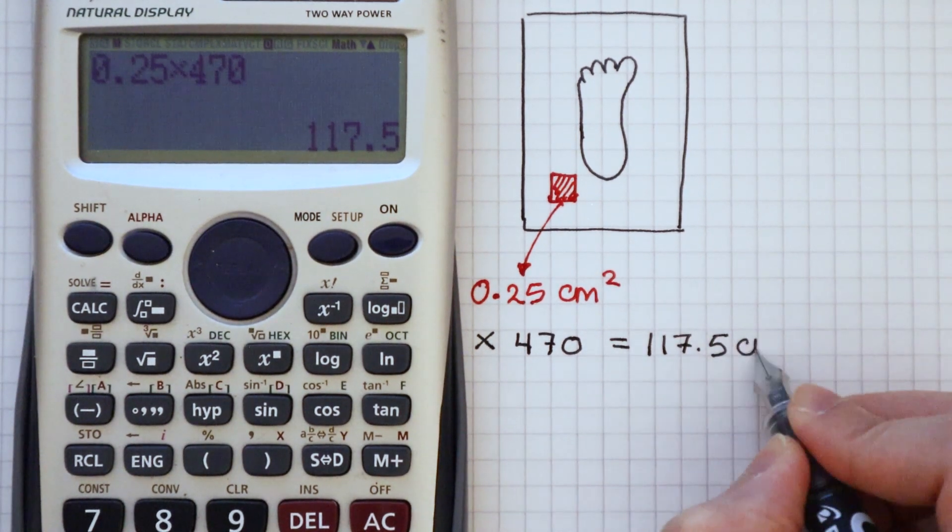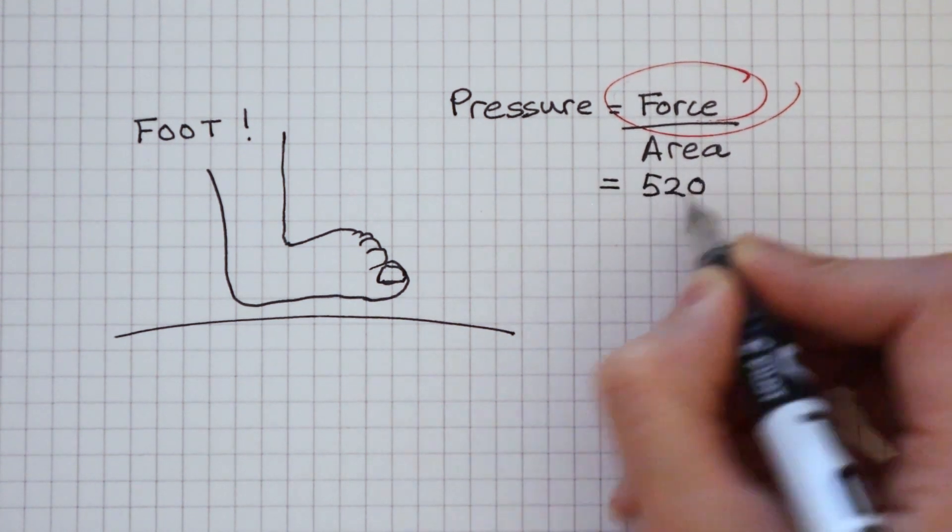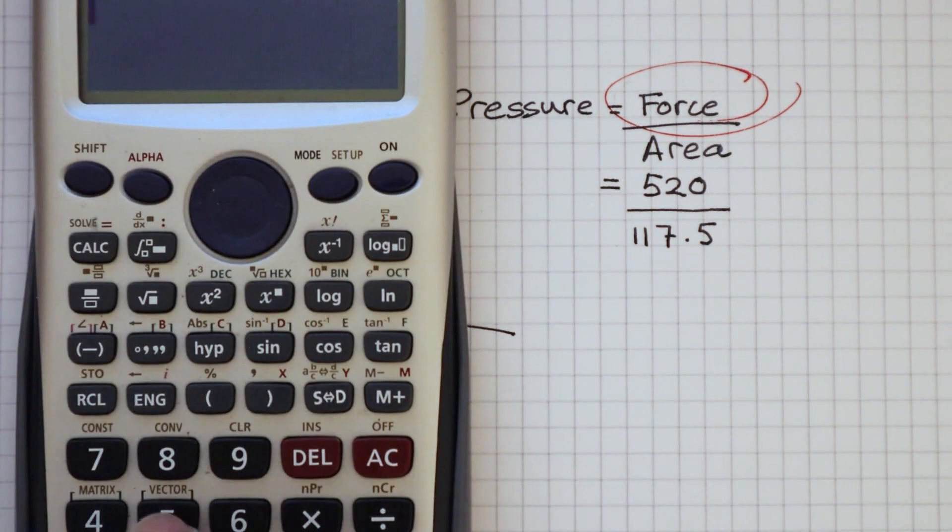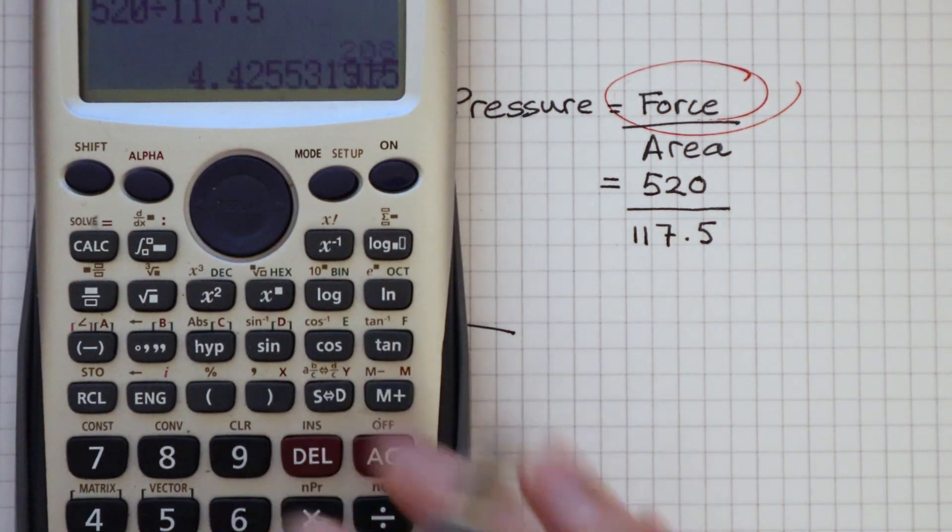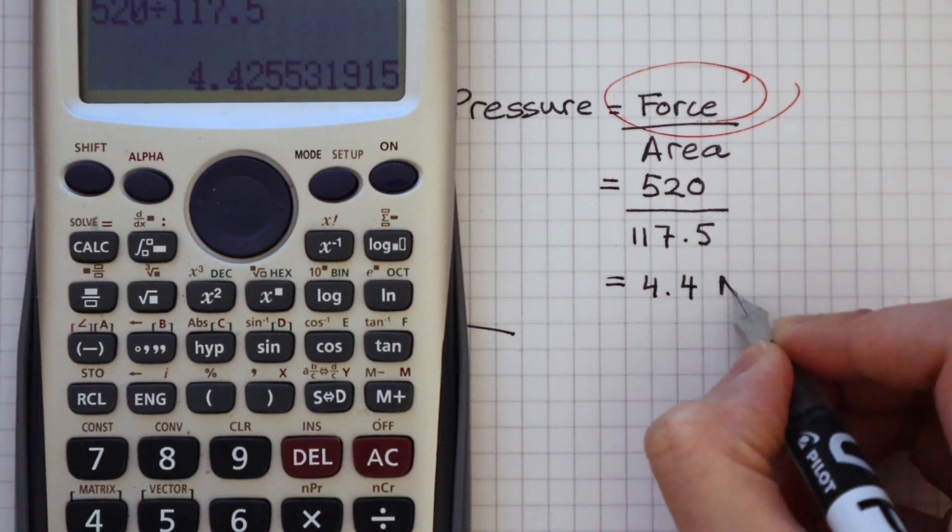Substitute this and the force back into the pressure equation. 520 divided by 117.5. That gives a pressure of 4.4 newtons per centimeter squared.